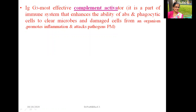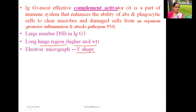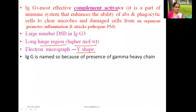IgG3 is the most effective complement activator. The complement activator is part of the immune system that enhances the ability of antibodies and phagocytic cells to clear microbes and damaged cells, promotes inflammation, and attacks pathogens at the plasma membrane. IgG3 has a large number of disulfide bonds and a long hinge region, giving it a higher molecular weight. In electron micrographs, the IgG molecule shows a Y-shaped structure. IgG is named because of its gamma heavy chain.